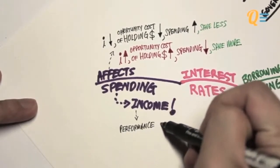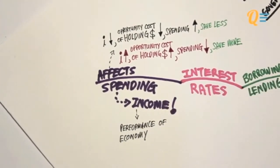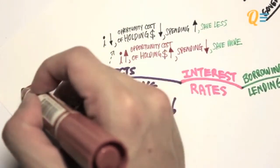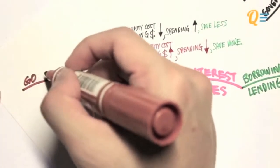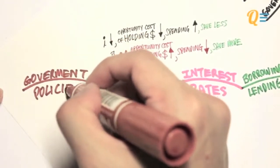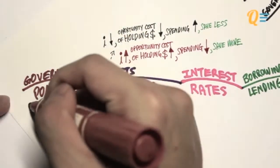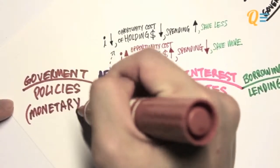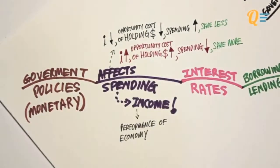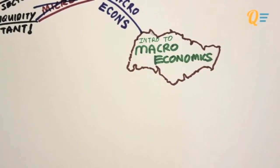Income actually measures the performance of an economy, and the performance of an economy is actually managed by the government bodies. The government bodies, using certain policies, can affect the interest rates of the economy, therefore affecting the performance or the income of the economy. More specifically, we're talking about monetary policies.